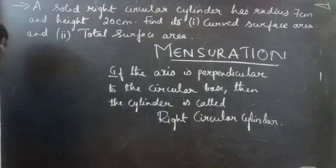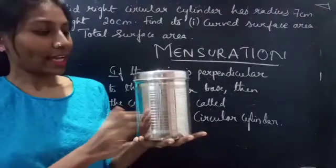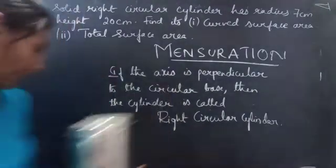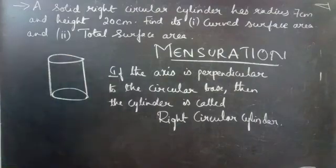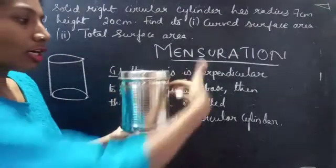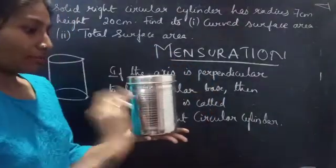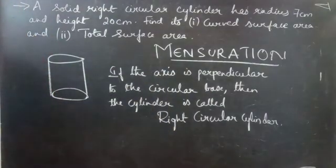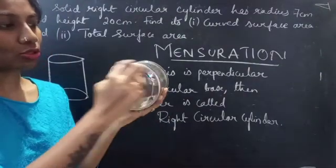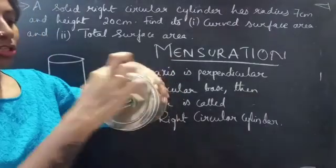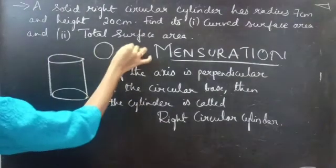We can consider it as a cylinder. This is our cylinder which has a curved surface. So this surface is actually curved — this is our curved surface. If this is a cylinder then we have a circular base. This is the base and this is the top of the cylinder, which is also a circle. Circle at the bottom and at the top.